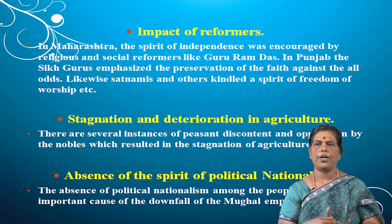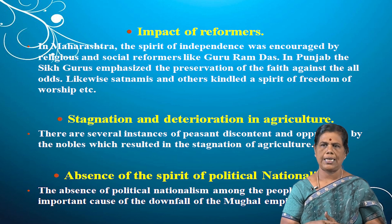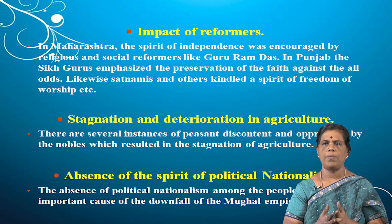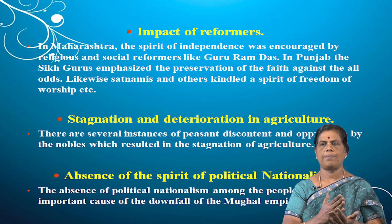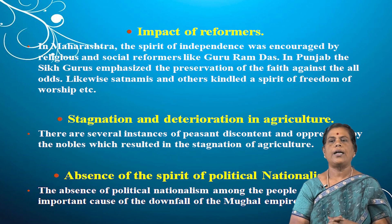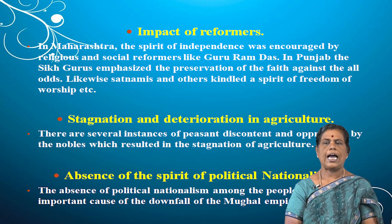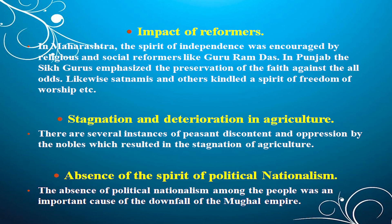Stagnation and deterioration in agriculture was another cause. There were several instances of peasant discontent — farmers were dissatisfied with the policy of Aurangzeb as well as the oppression of the nobles, which resulted in stagnation of agriculture. Finally, the last important reason was the absence of the spirit of political nationalism among the people of India. This was one of the most important causes of the downfall of the Mughal Empire.